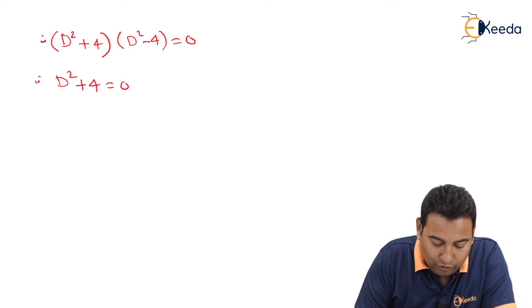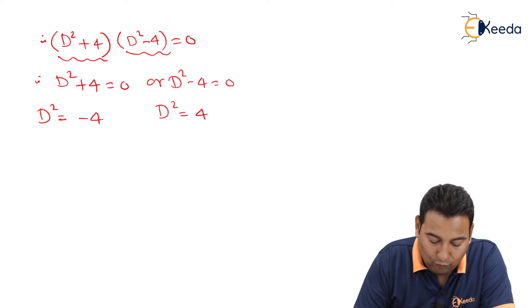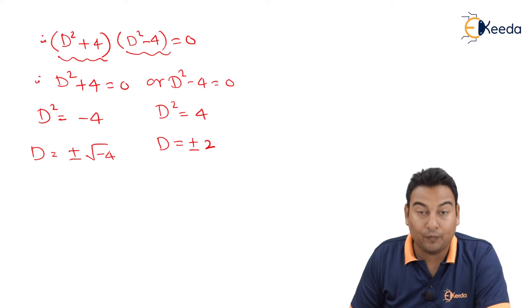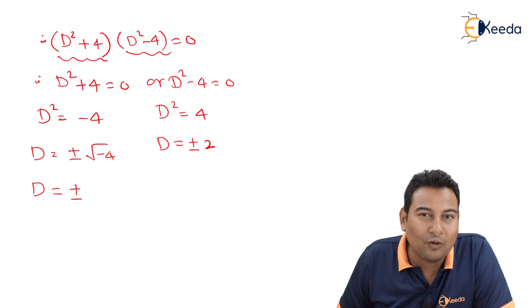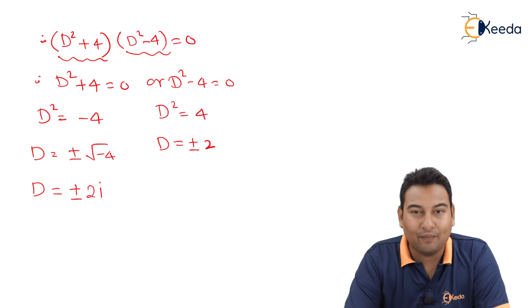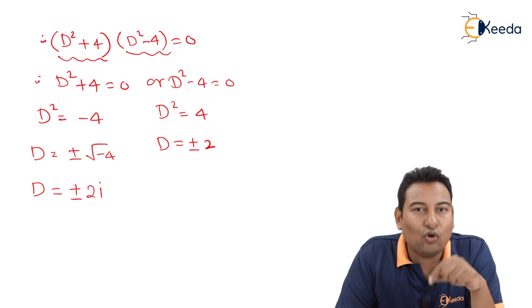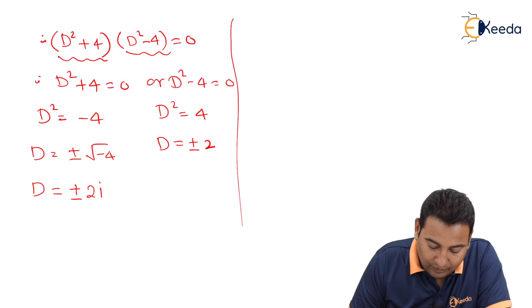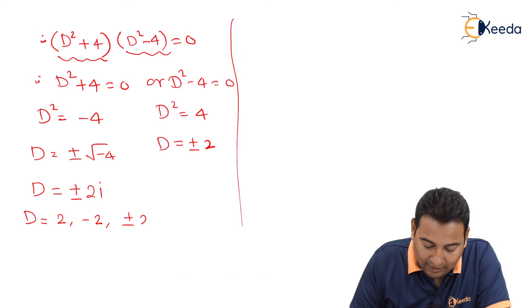Either D² + 4 = 0 or D² minus 4 = 0. From D² = minus 4: D = ±√(−4) = ±2i. From D² = 4: D = ±2. So the roots are 2, minus 2, and ±2i.